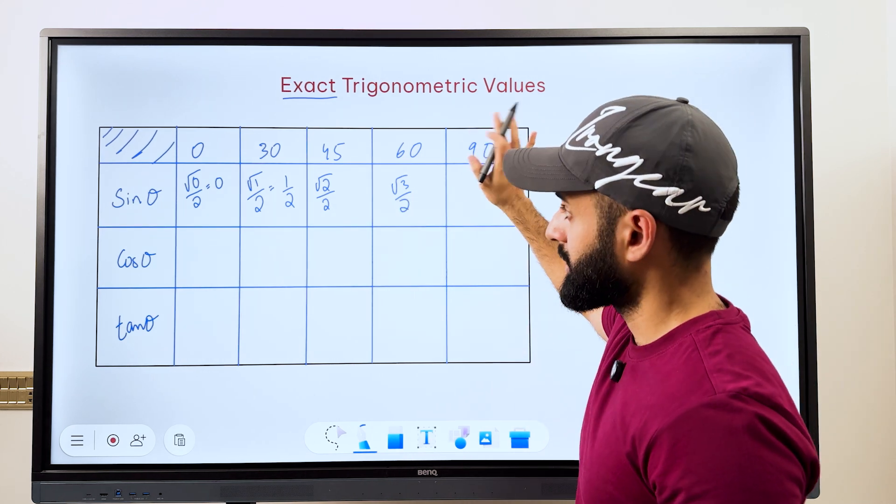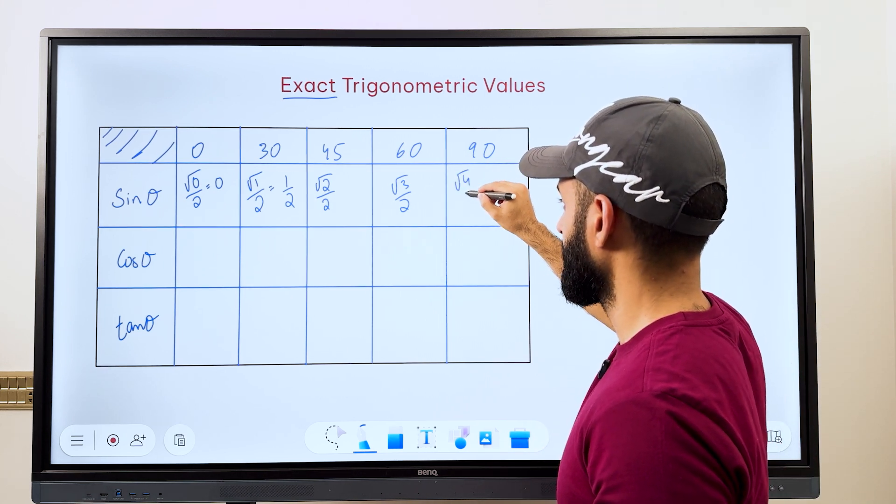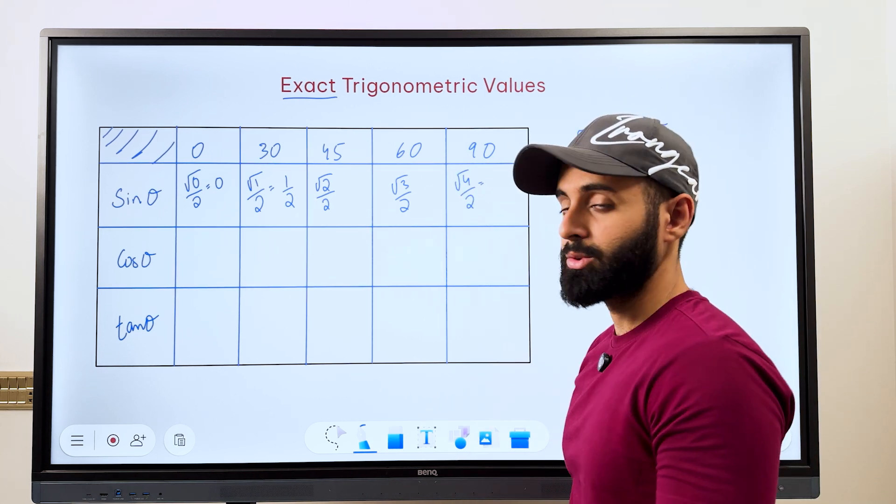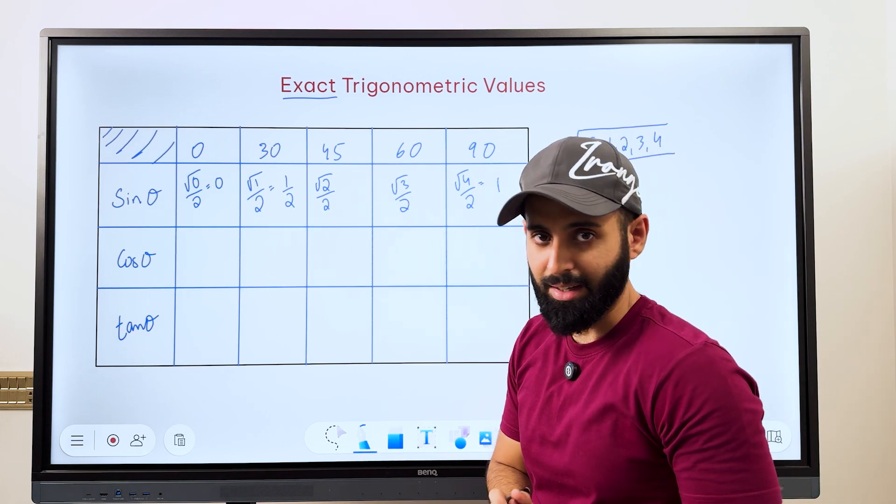For 90, which is the last value, we pick the last value inside the square root, that's 4. So root 4 upon 2, root 4 is 2, 2 upon 2 is 1. So there you go, that's the value of sin 90.